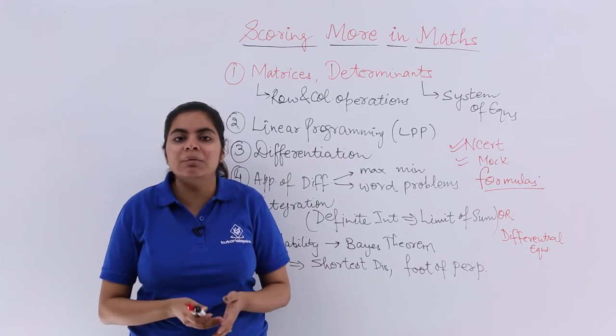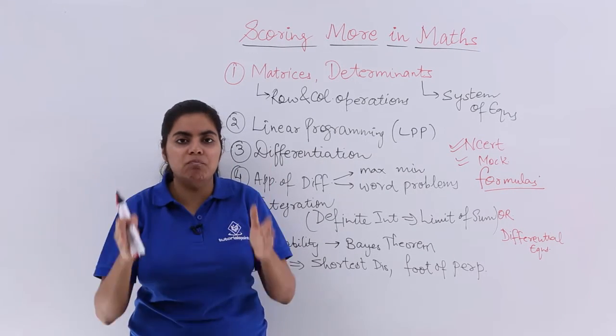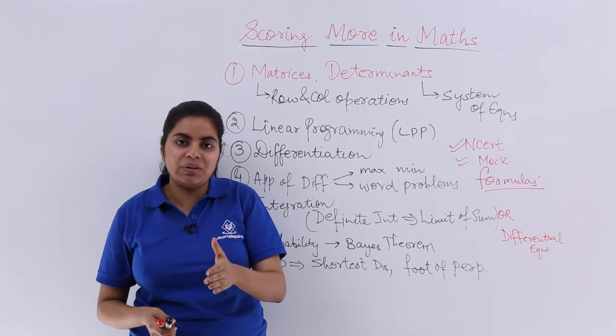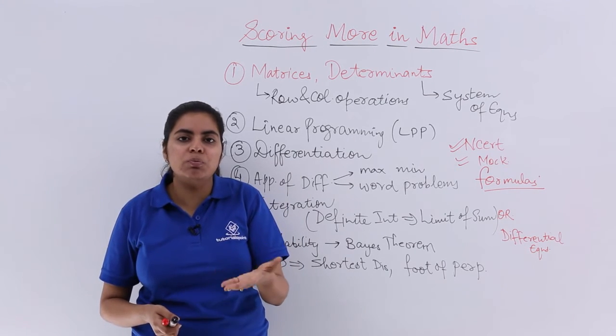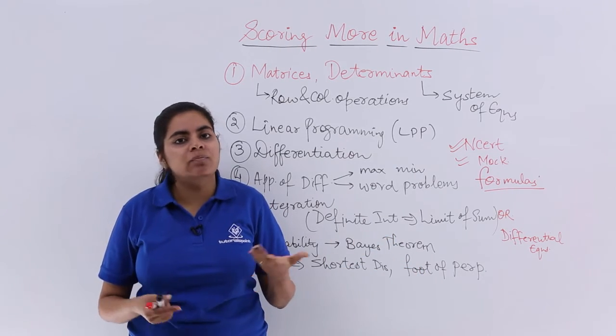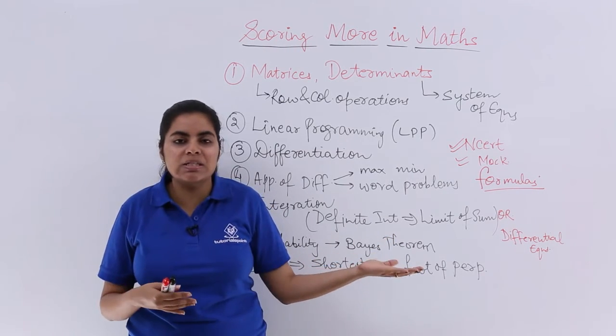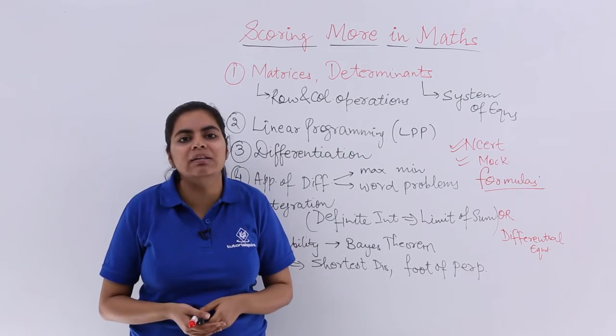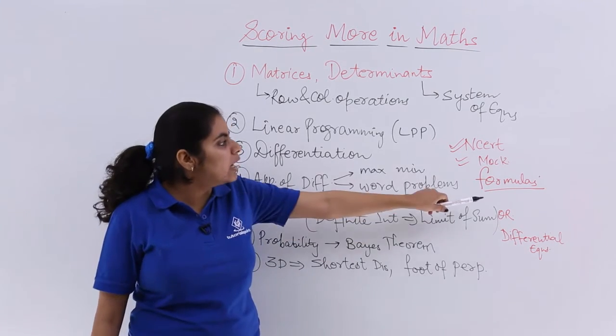In mathematics, why formulas are more important? Because there is always step marking. Each step that you write in your answer sheet fetches you marks. If you forget the formulas, in the question paper, the same story will happen. Out of 6, you will get 4, even if you have done the question correctly. So formulas are important.